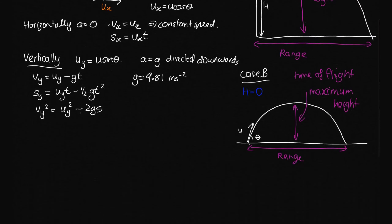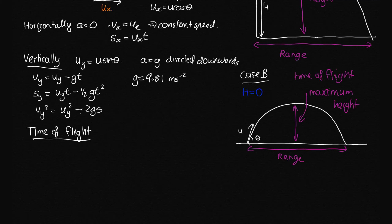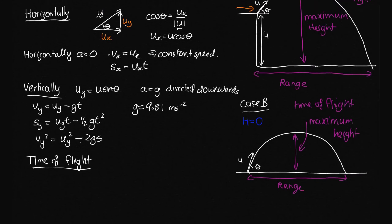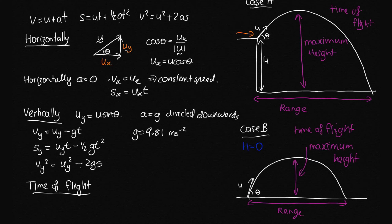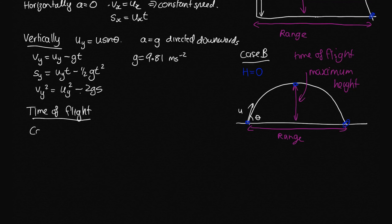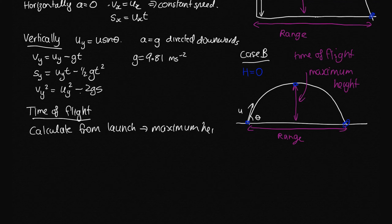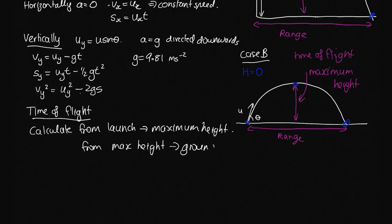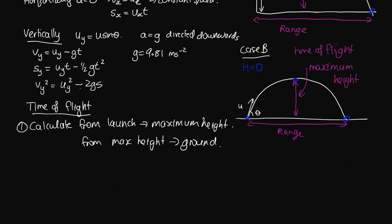To get the time of flight, we'll split our time into two components. We'll work out the time for the projectile to go from the initial position to maximum height, and then the time for it to go from maximum height down to ground level — that is, from launch to maximum height, and then from maximum height to ground.